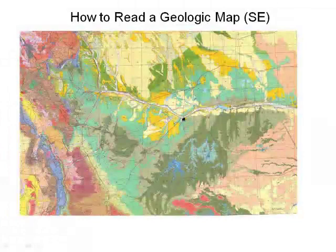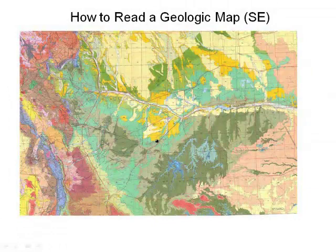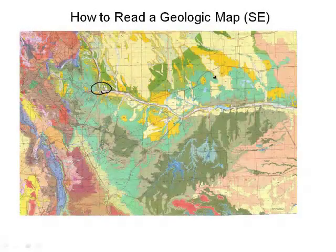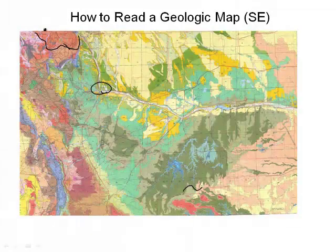Here we have southeastern Colorado. Southeast has the eastern plains, and here's Pueblo, Colorado. These areas typically tend to be sedimentary rocks, but we get some dark colors too — we have some metamorphic rocks down here. And then here's the southern portion of the Pikes Peak area.